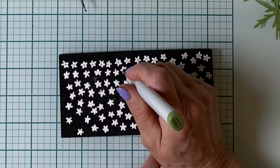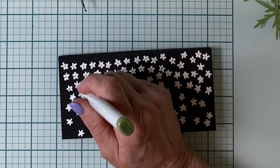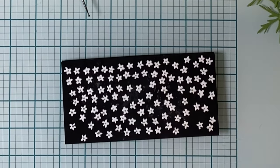I started off by cutting the little flowers. The die indicated to cut it six to seven times. I did it seven times and I had just a few left over.